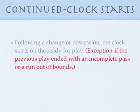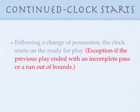Now let's look at plays where the clock starts on the ready for play. Fourth and ten for team A at the 50-yard line. The quarterback throws a completed pass and the ball carrier is tackled at the B 45-yard line. The clock stops because team A's fourth down possession series has ended. Team B is awarded the ball, first and ten at the 45-yard line. The previous play did not end in an incomplete pass, nor did it end with the runner out of bounds, so the referee signals the ready for play and the game clock starts.